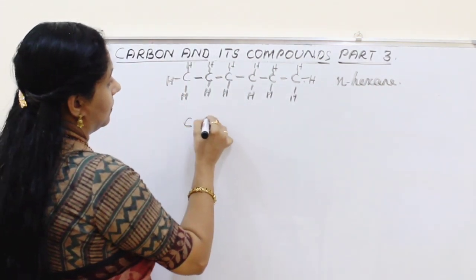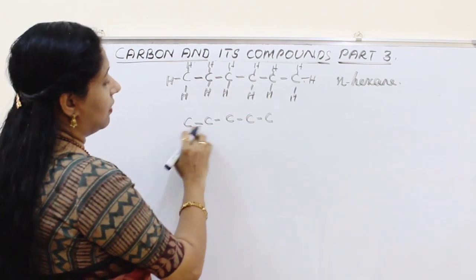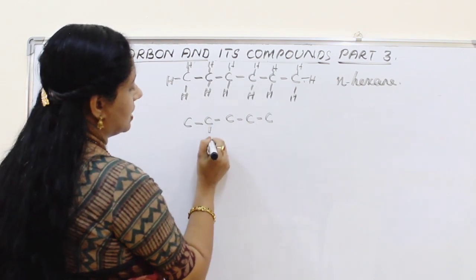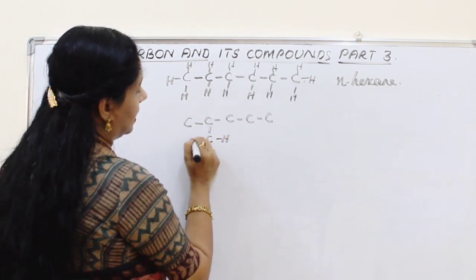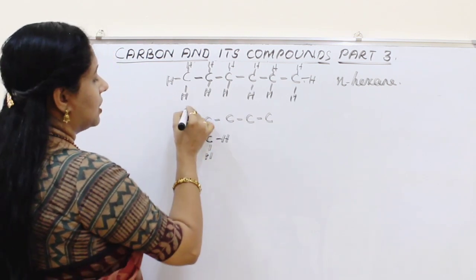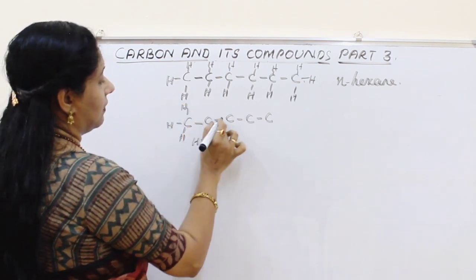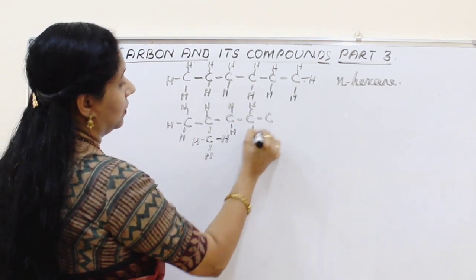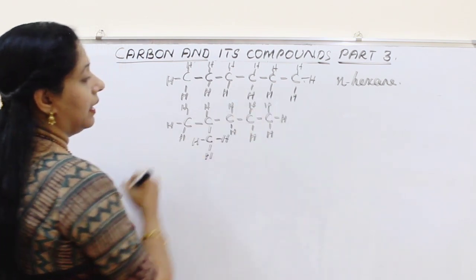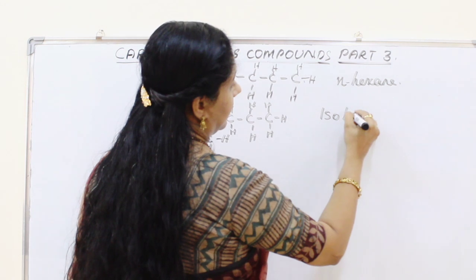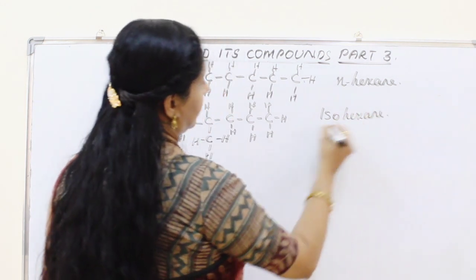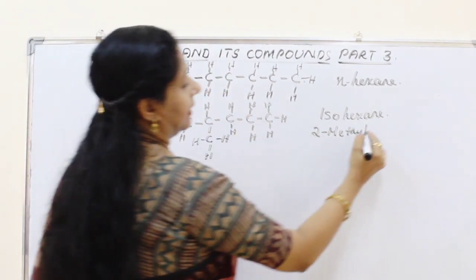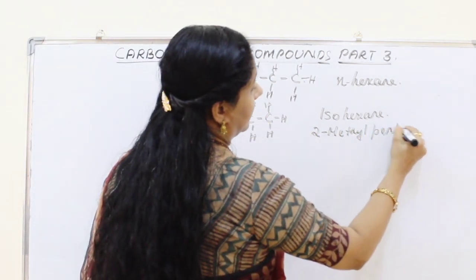The second isomer is made by placing 5 carbons in a chain and adding one CH3 branch at the second carbon. Counting from the end that gives the smaller number, the branch is at carbon 2. This structure is called isohexane, or 2-methylpentane — because the main chain has 5 carbons.